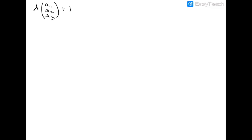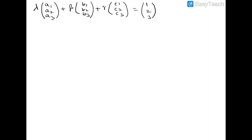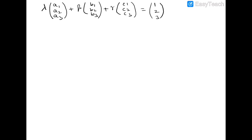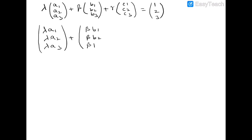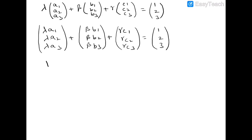Now let us substitute for v1, v2, v3, and b. We get λ(a1, a2, a3) + β(b1, b2, b3) + γ(c1, c2, c3) = (1, 2, 3). Lambda will multiply every element, giving (λa1, λa2, λa3) + (βb1, βb2, βb3) + (γc1, γc2, γc3) = (1, 2, 3).